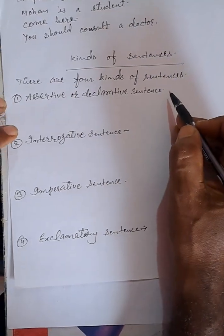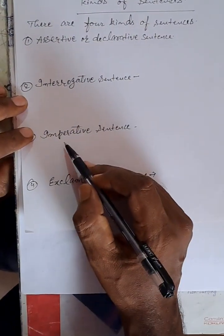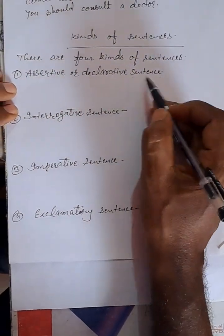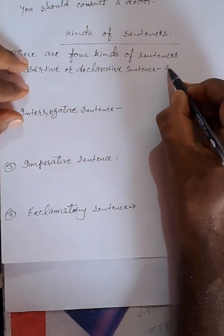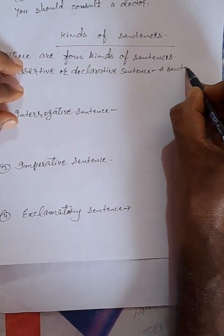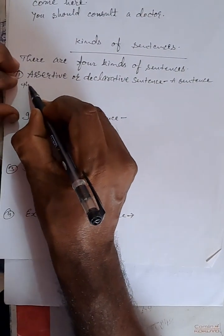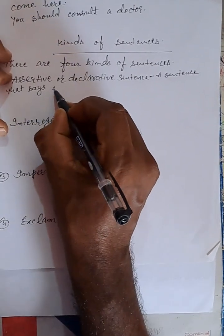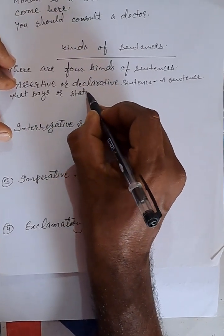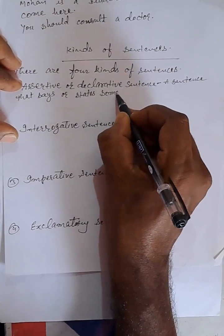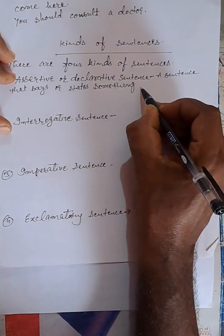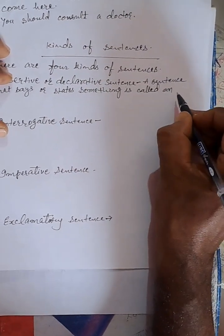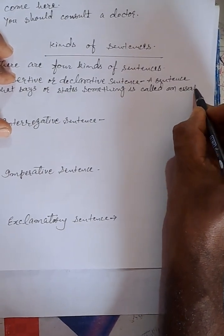The four kinds are: assertive or declarative sentence, interrogative sentence, imperative sentence, and exclamatory sentence. First is the assertive or declarative sentence — a sentence that says or states something is called an assertive sentence.